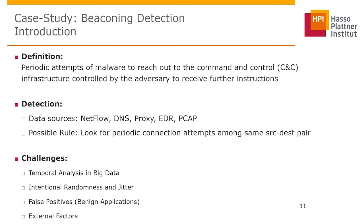In our work, we attempted to highlight the importance of advanced analytics by extending traditional SIEMs with a simple yet difficult use case: beaconing detection. Beaconing is the periodic attempt of malware to reach its command and control server for instructions from the adversary. It is important as it is characteristic of advanced malware. One can look for beaconing using data sources such as NetFlow, DNS, proxy, PCAP, or even EDR logs that record network connections.